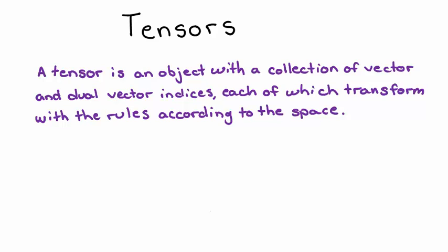Tensors can have any number of vector indices and any number of dual vector indices. We classify by the form P,Q. A P,Q tensor has P vector indices, or upper indices, and Q dual vector indices, or lower indices.